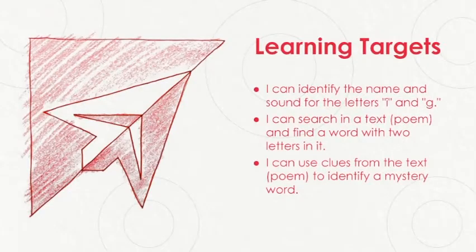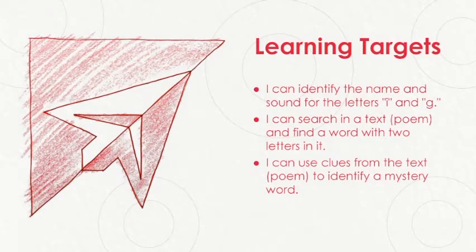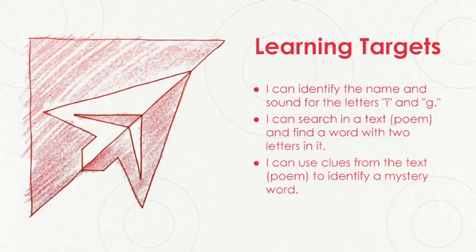There are three learning targets for our lesson today. The first target says I can identify the name and sound for the letters I and G. The second target says I can search in a text or poem and find a word with two letters in it. And the last target says I can use clues from the text or poem to identify a mystery word.